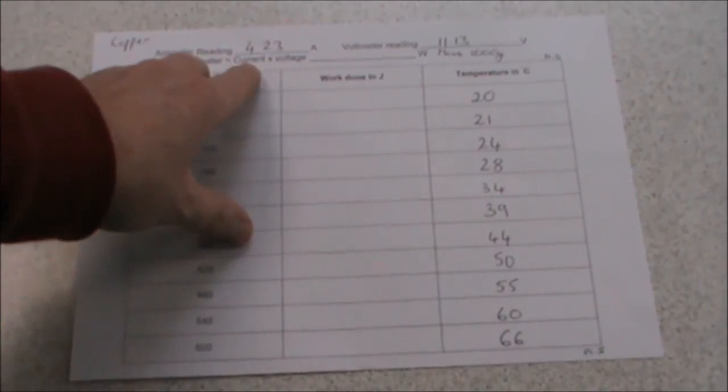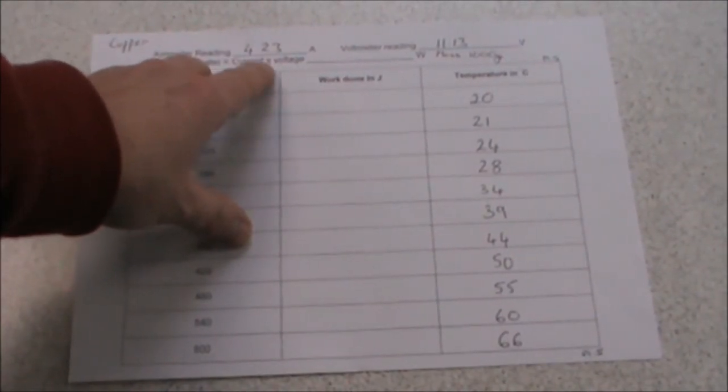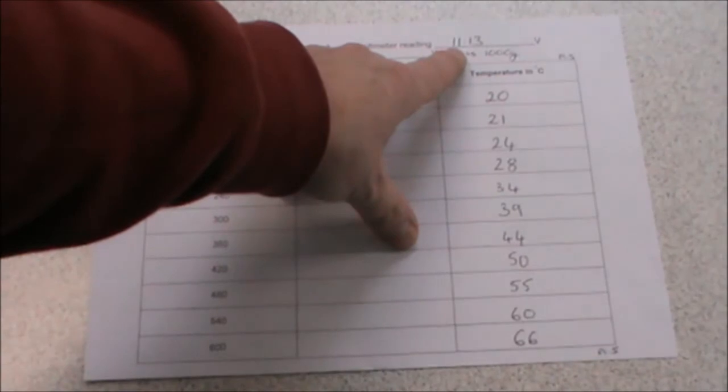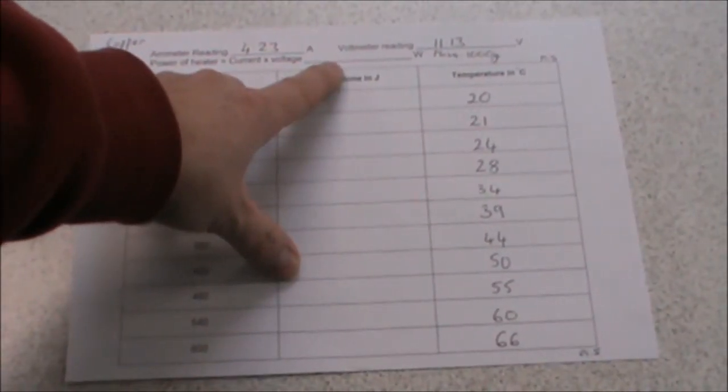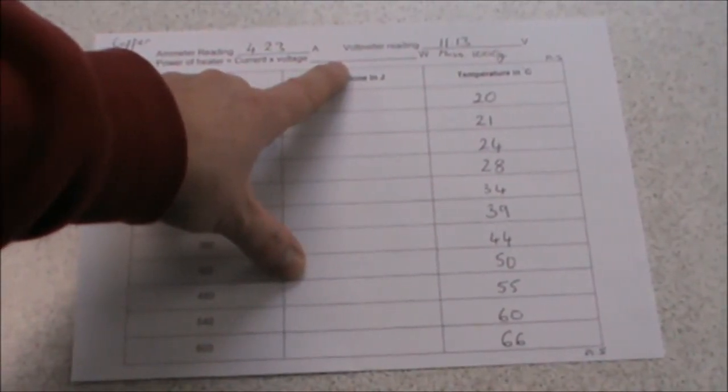The next stage is to calculate the power of the heater. To do this, we multiply the current, 4.23, by the voltage, 11.13, and the answer is recorded on that line there.